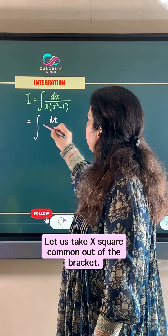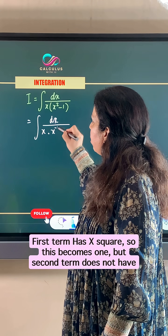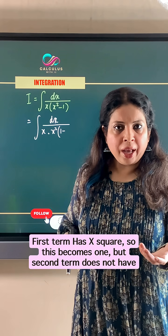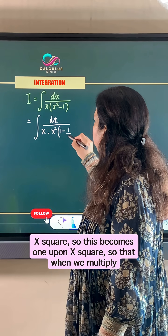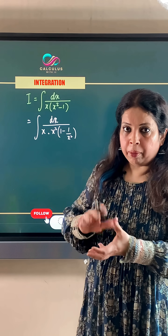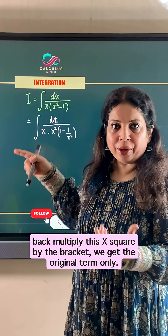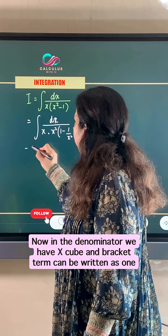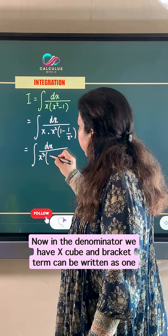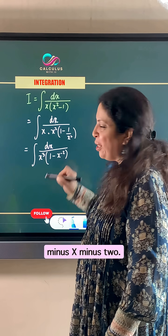Let us take x squared common out of the bracket. The first term has x squared so this becomes 1, but the second term does not have x squared so this becomes 1 upon x squared, so that when we multiply back this x squared by the bracket we get the original term only. Now in the denominator we have x cubed and the bracket term can be written as 1 minus x raised to the power minus 2.